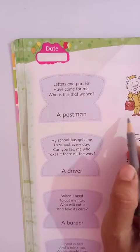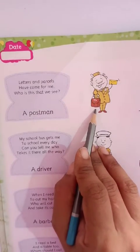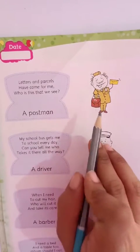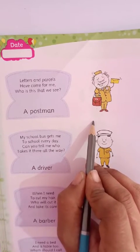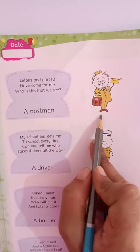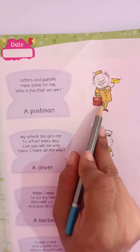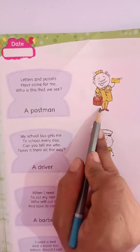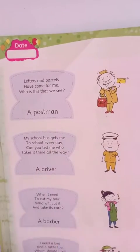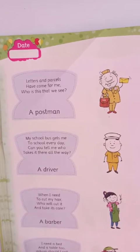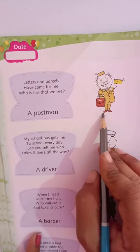Chalo, first picture here is given — postman. Right? Jo aapke ghar pe aapke papa ka money order hai, ya kisi ka letter hai, ya koi bank statement hai, ya kuch bhi aapke ghar aata hai — toh vo dene kaun aata hai? Postman. Vo aapko message pahunchate hain. Right? Abhi mobile mein toh aap type karke message bhejte ho, but kuch cheezein aisi hain jo aap mobile se type karke send nahi kar sakte. Theek hai? Toh uske liye postman ki help hum log lete hain.